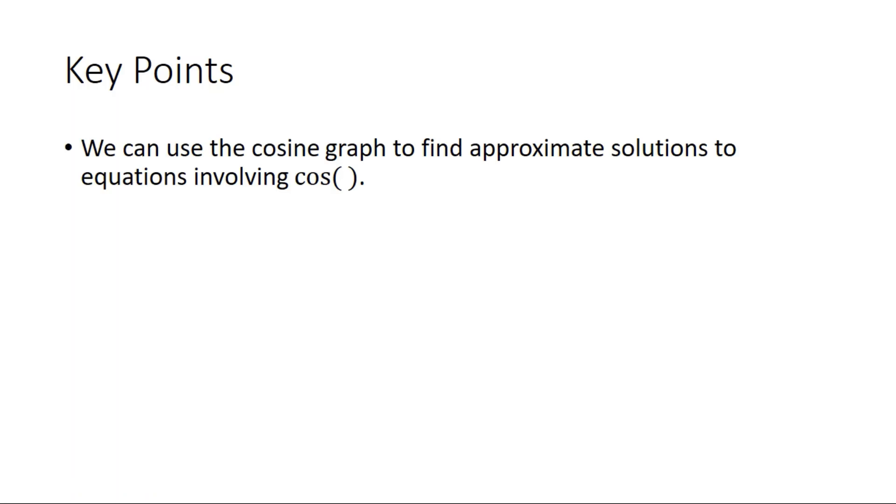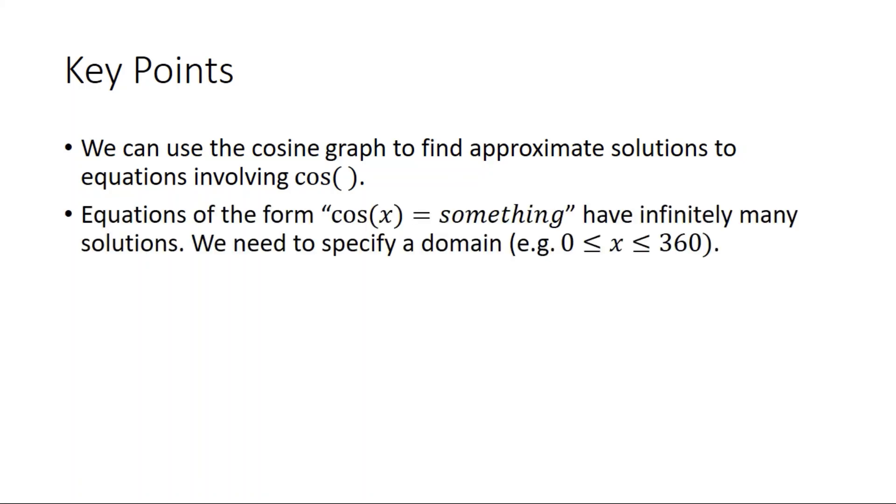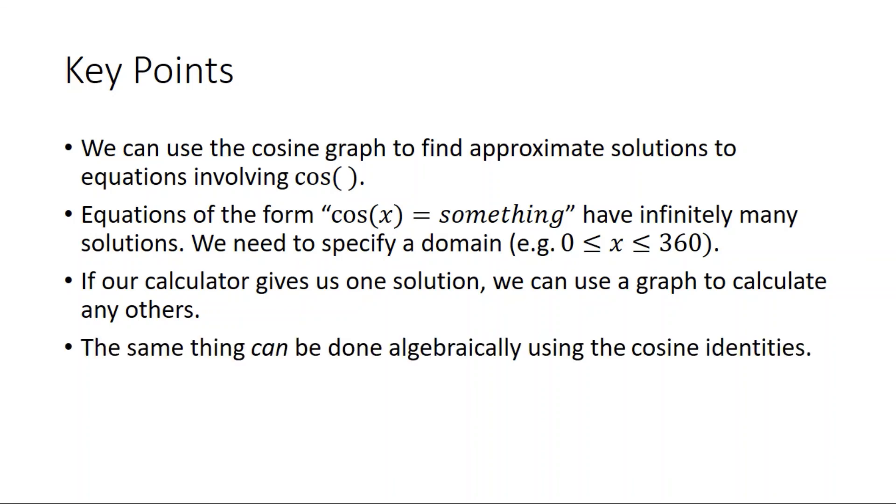Key points from this video. We can use the graph to find approximate solutions to equations involving cosine. Equations of the form cosine of x equals something have infinitely many solutions. We need to specify a domain. If our calculator gives us one solution, we can use a graph to calculate any others. And the same thing can be done algebraically using the cosine identities.